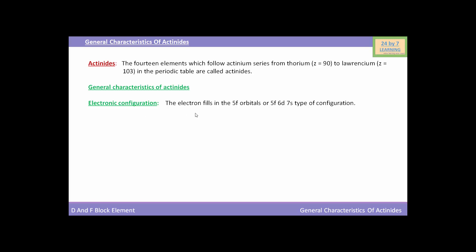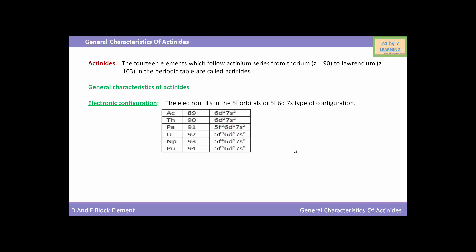First of all, we will see the electronic configuration of actinides. The electron fills in the 5f orbitals, or follows a 5f 6d 7s type of configuration. In this table, the electronic configurations of different actinides are given.